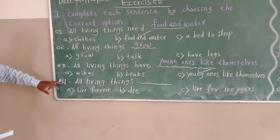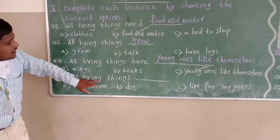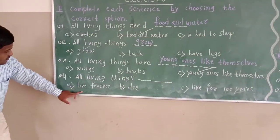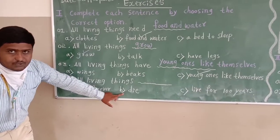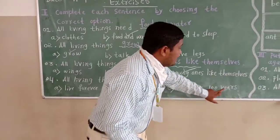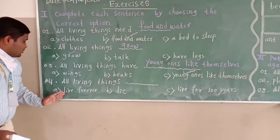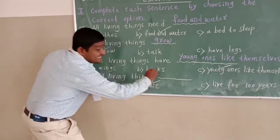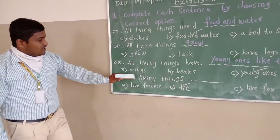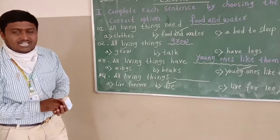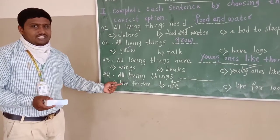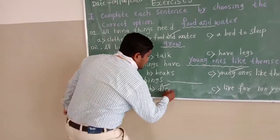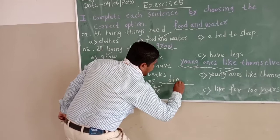Last one, fourth: all living things blank. The options are: live forever, die, live for 100 years. The correct answer is die — all living things die. This is also one special characteristic of living things. We already learned this in our previous class. So the answer is: all living things die.